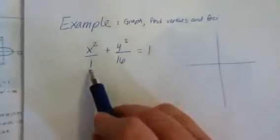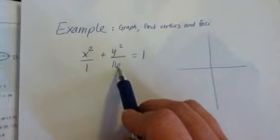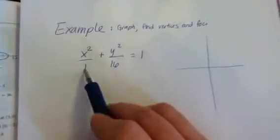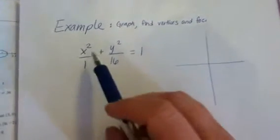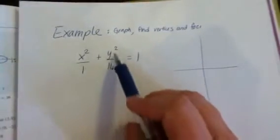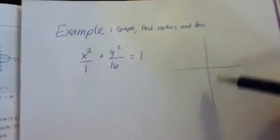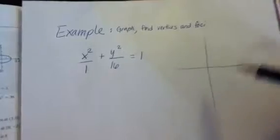So let's start by looking at these numbers. Since this one is smaller and this one's larger, this one would be a squared and this one would be b squared. So that means b is the x direction and a is the y direction, so this ellipse will be tall and skinny.